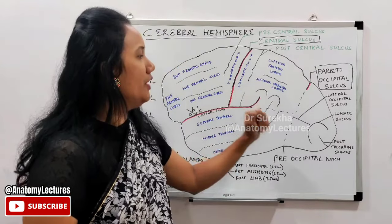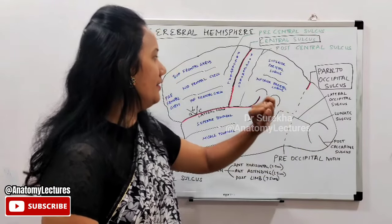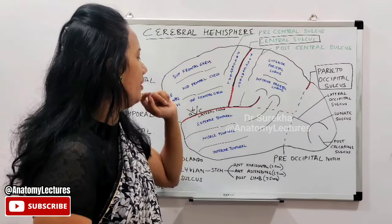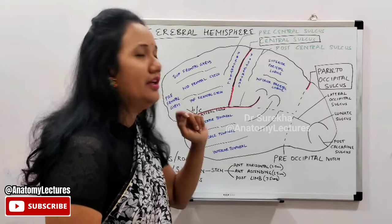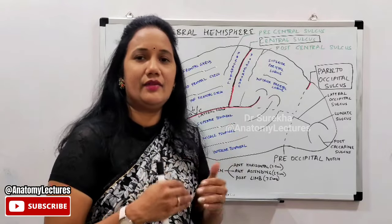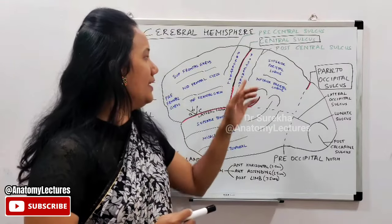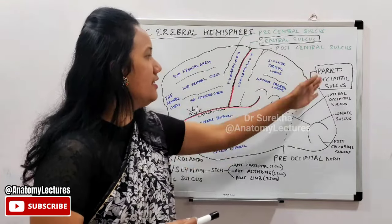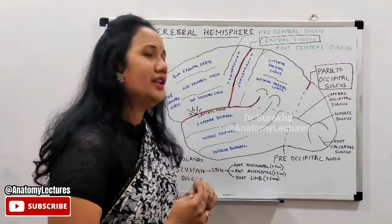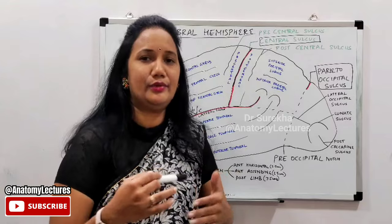Apart from these major sulci, there are also the lateral occipital sulcus, lunate sulcus, post-calcarine sulcus, interparietal sulcus, superior and inferior frontal sulci, and superior and inferior temporal sulci. The major sulci — central sulcus, lateral sulcus, parieto-occipital sulcus, and the pre-occipital notch — divide the hemisphere into lobes, while the minor sulci further divide individual lobes into lobules.